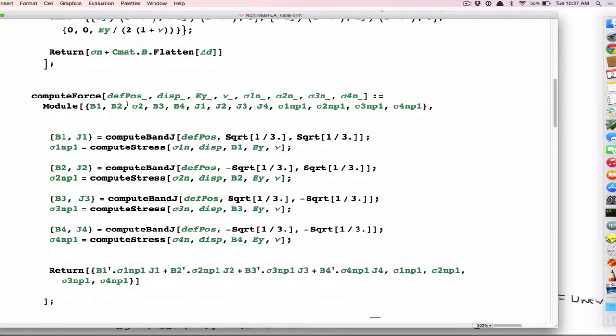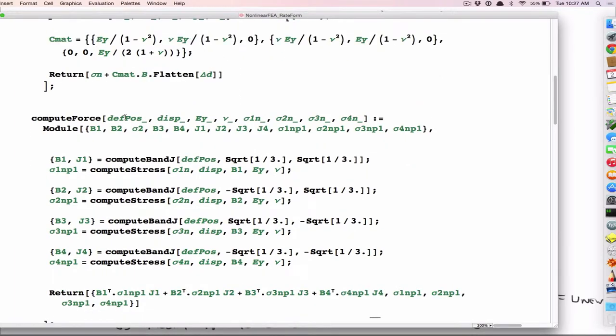And the force matrix is just the integral of B times the stress times the Jacobian determinant. But because I'm using Gauss integration, I use the two by two rule. So I compute that four times at the different Gauss points. The square root of one third, one third, minus square root one third, one third, and so on. So then the sum of all those is that integral. It's computing the integral B transpose stress J.